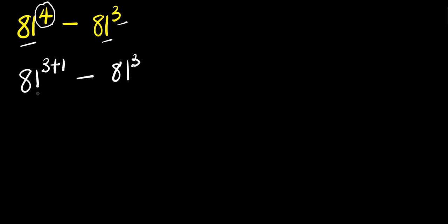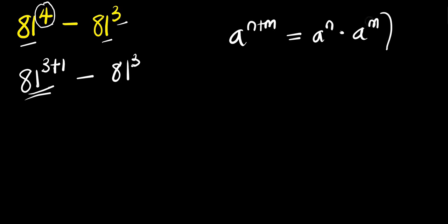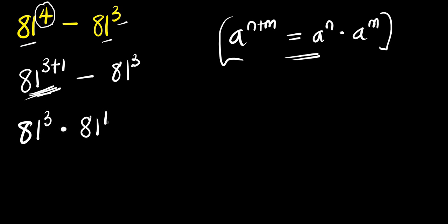Considering the identity: if you have a to the power n plus m, this equals a to the power n times a to the power m. We apply this identity, so we are going to have 81 to the power 3 times 81 to the power 1, then minus 81 to the power 3.